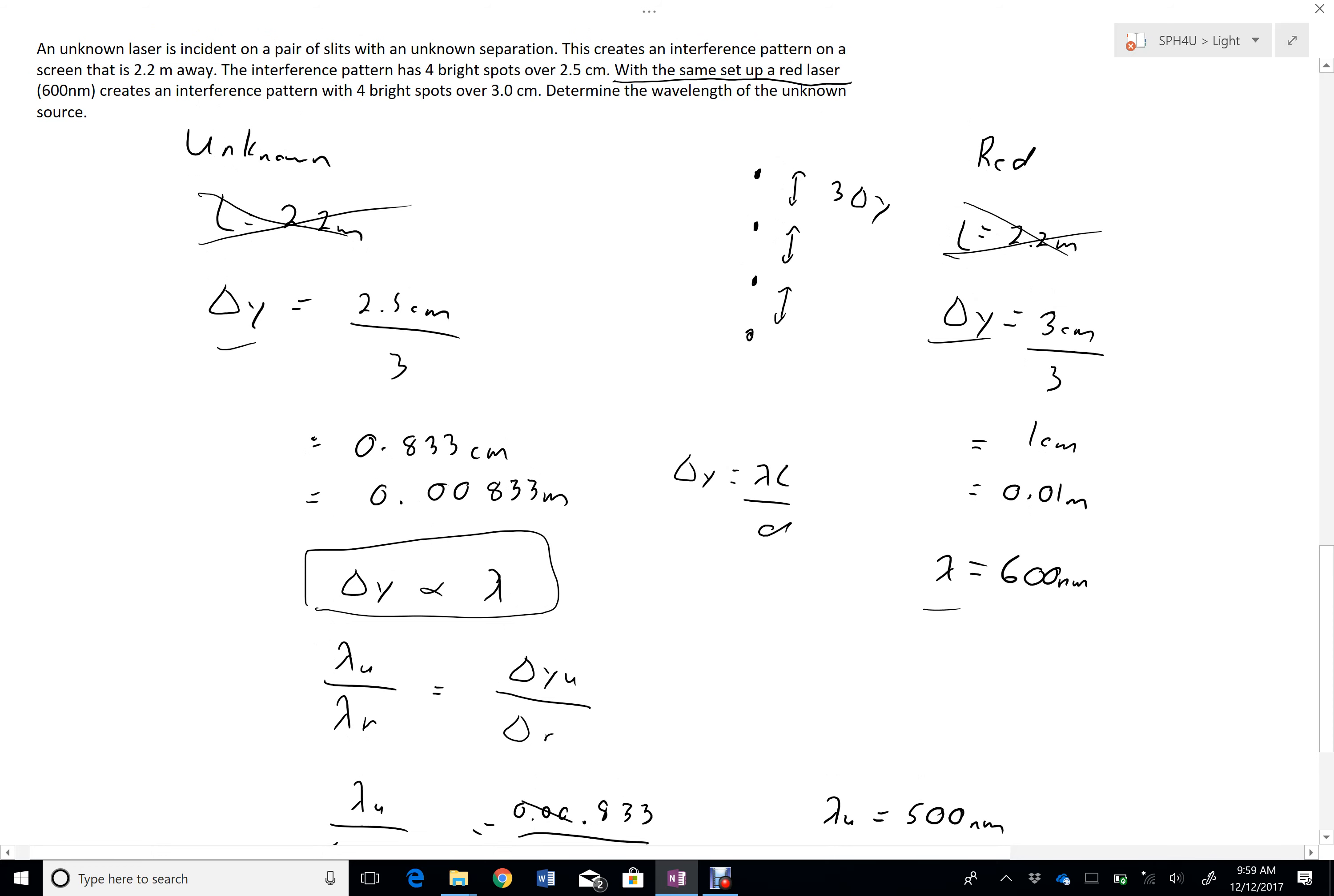So, that's some problems or some examples associated with the Young's double slit experiment. And that shows how you can find the wavelength of an unknown color, as long as you have a known color.